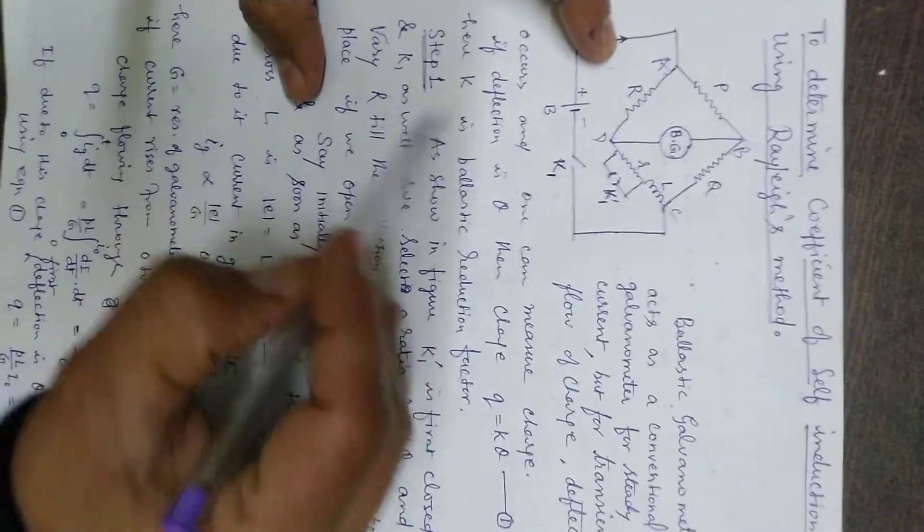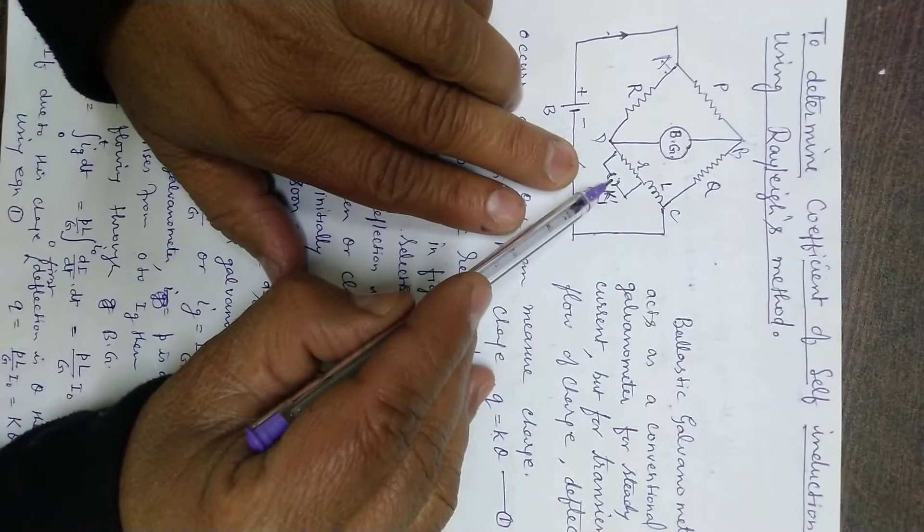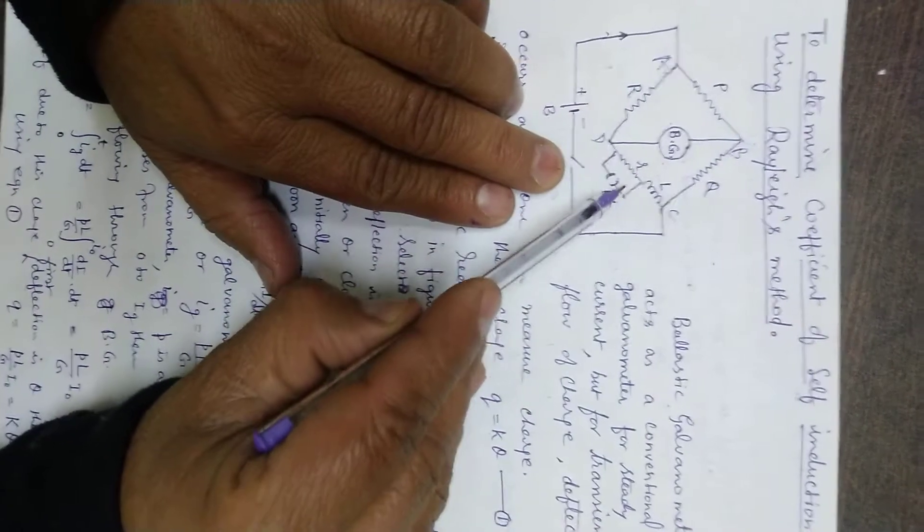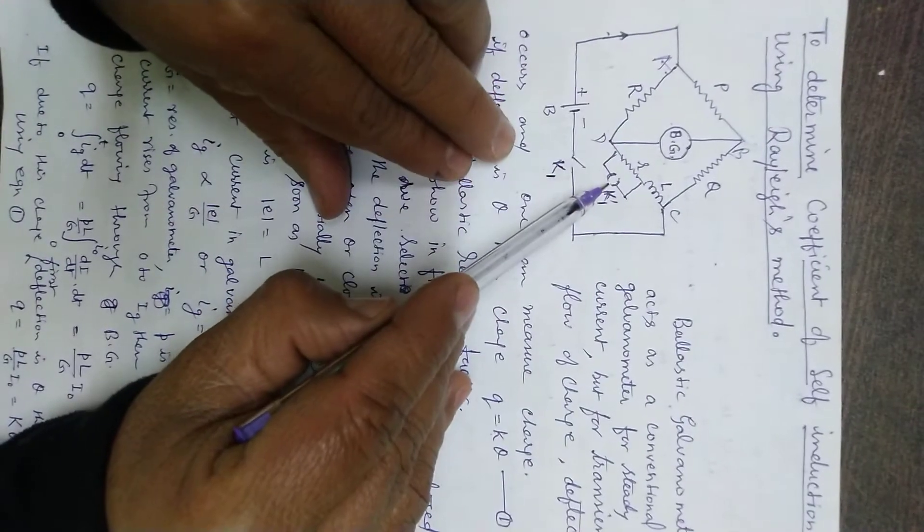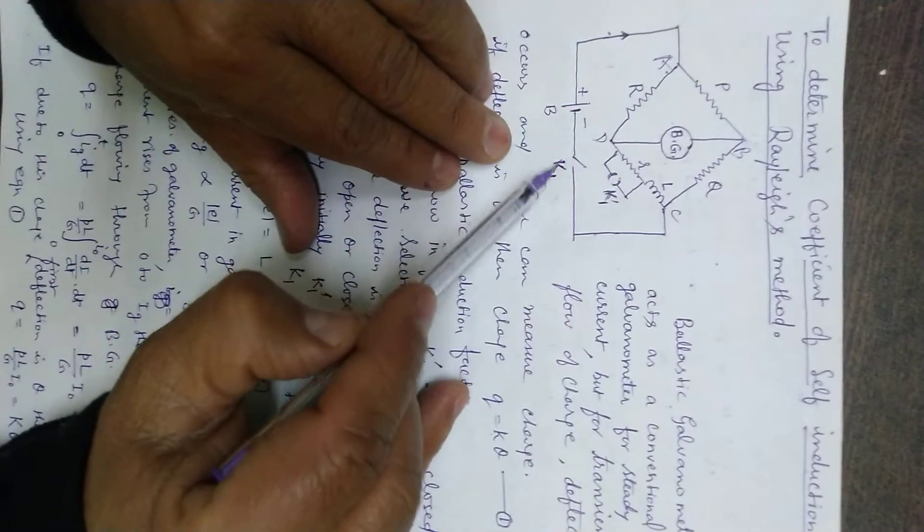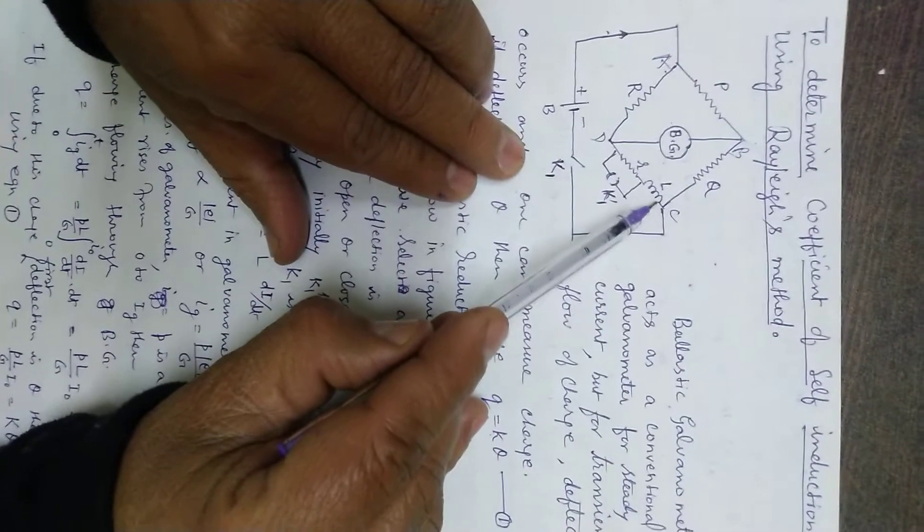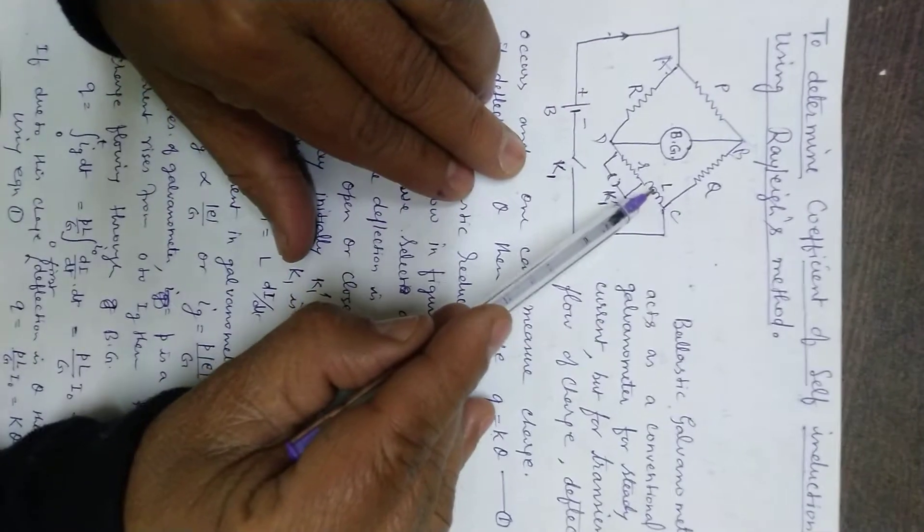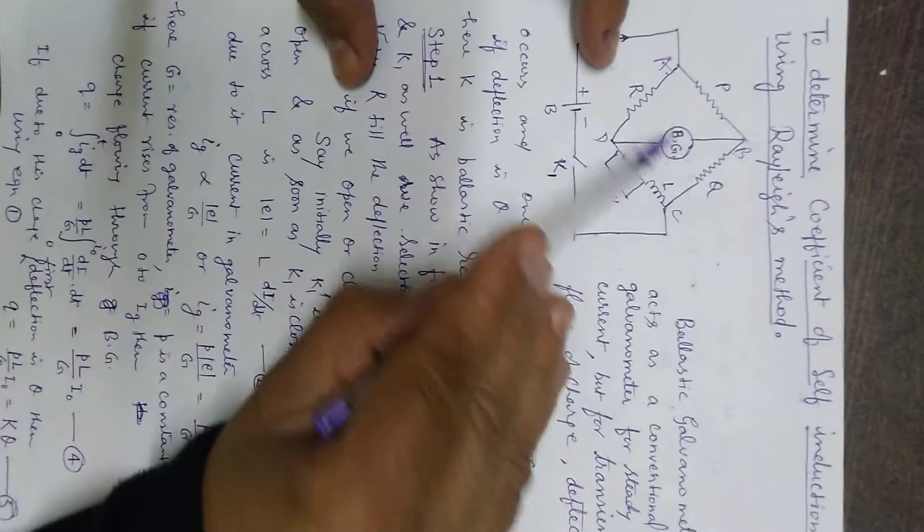There are two steps to perform this particular experiment. In the first step, suppose you have closed this K1 dash, then r will be short-circuited and there will be no role of small r in the circuit. After closing K1 dash, if you open or close this K1, then it will make a difference.